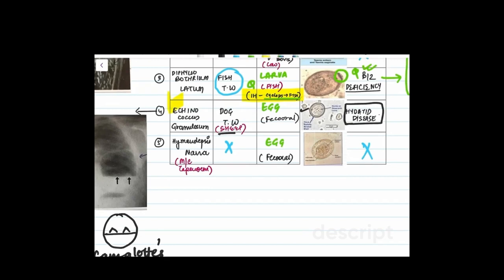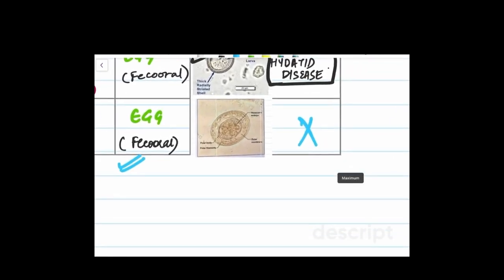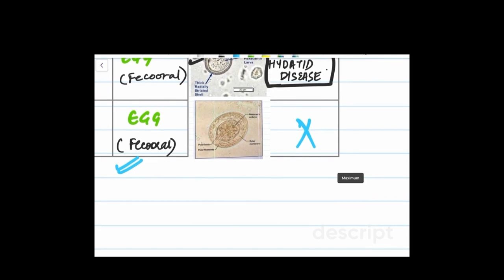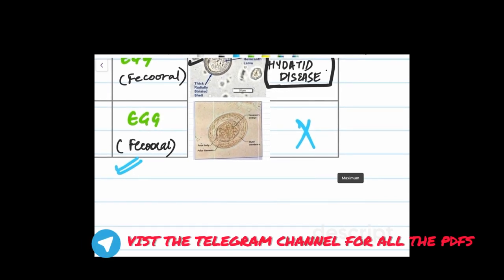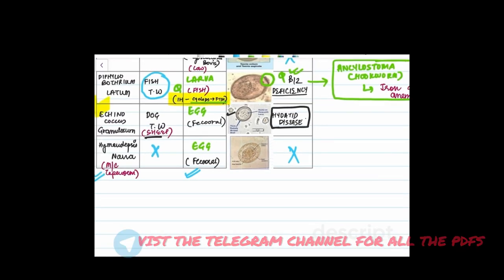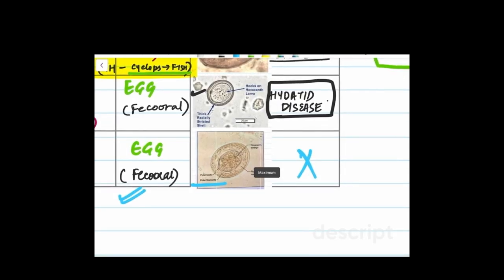Talking about the next tapeworm we have Hymenolepis nana. This is the most common tapeworm. The fecal-oral route, you ingest the egg and that's how you get the disease and this is the egg. Just remember this egg is also important and is asked once. You have the polar filaments as is mentioned in the diagram which helps you recognize the egg.